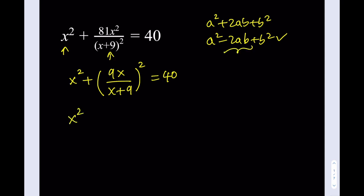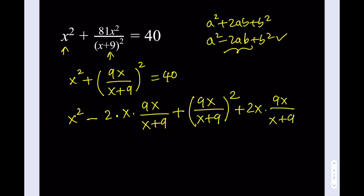So let's make one thing clear that our a is x and b is going to be 9x over x plus 9. So basically what I'm trying to do is I'm trying to write this as a perfect square. And the missing term in this case is going to be 2 times x times 9x over x plus 9. Since I just subtracted something from the expression, I have to add it. So I'm just adding the same expression.